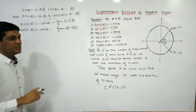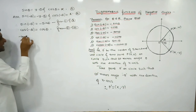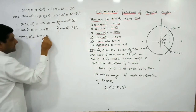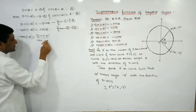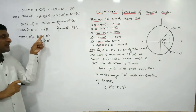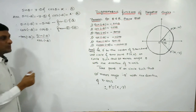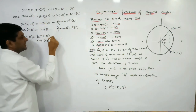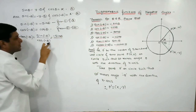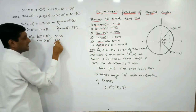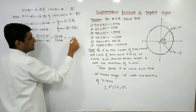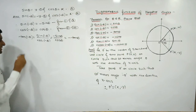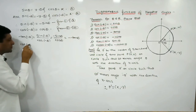Once these two results are known, we can easily prove the remaining formulas. Tan(-θ) can be written as sin(-θ) / cos(-θ). We just proved sin(-θ) = -sin θ and cos(-θ) = cos θ. So tan(-θ) = -sin θ / cos θ = -tan θ.